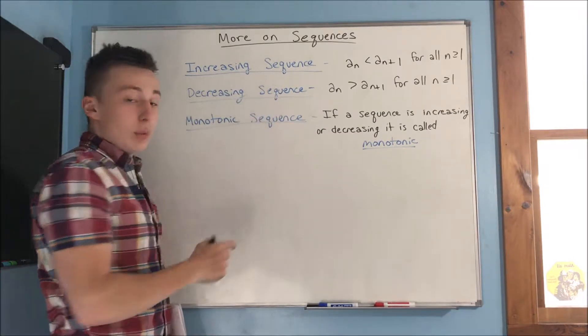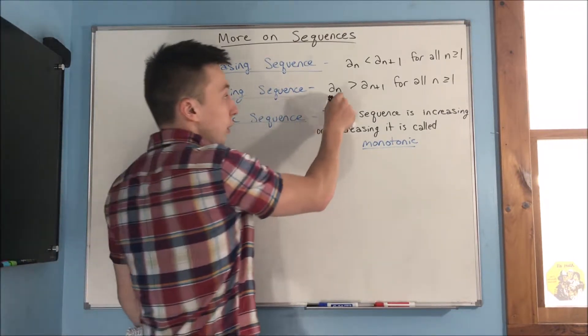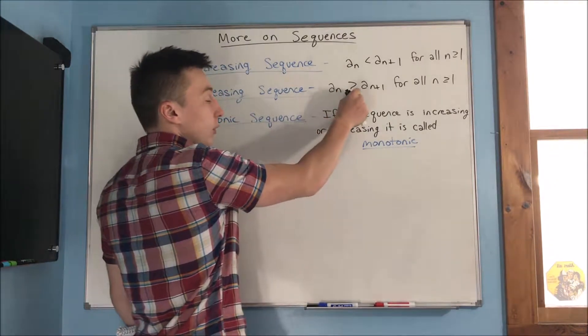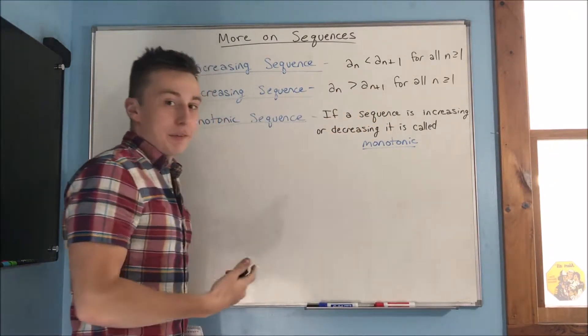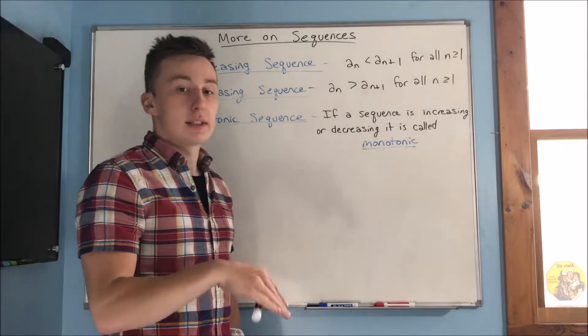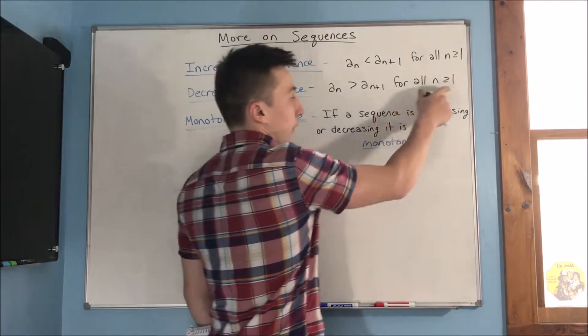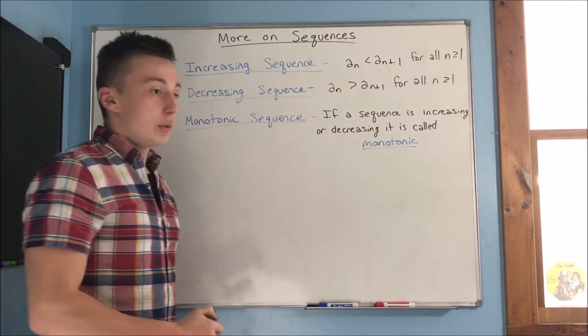If it is a decreasing sequence, then you're going to have that your term is going to be greater than the term that comes after it. That would be a decreasing sequence.